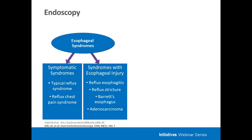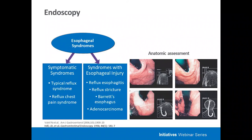Endoscopy also assesses anatomic factors related to GERD mechanisms, including identifying hiatal hernia and looking at the gastroesophageal flap valve using the Hill classification. Frank hiatal hernia is reflected by a Hill grade four, and with each increasing degree the risk of reflux susceptibility is thought to increase. This can factor into management decisions, particularly when considering surgery or endoscopic therapies that target bolstering the anti-reflux barrier.